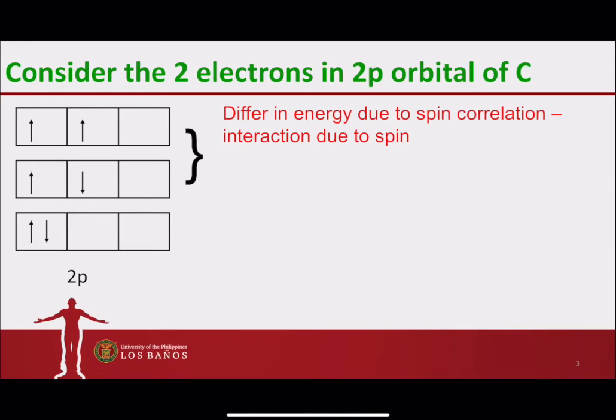We can think of that the two electrons in the 2p orbital wherein they are arranged in parallel spin, they are exchangeable with one another. For example, if I label this as electron 1 and the second as electron 2, since they are of parallel spin, they are actually able to exchange positions with one another.